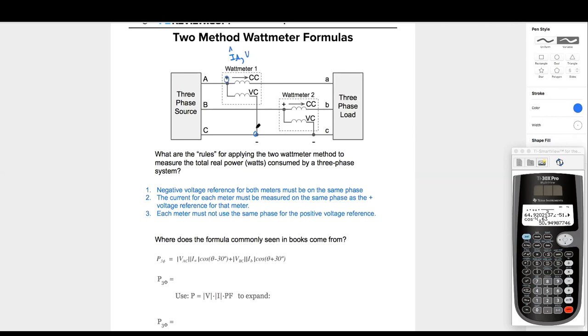And V, what? VAC, right? VAC. Wattmeter two down here is measuring what? IB. And what voltage? B to C. So VBC. Are we all with me so far?